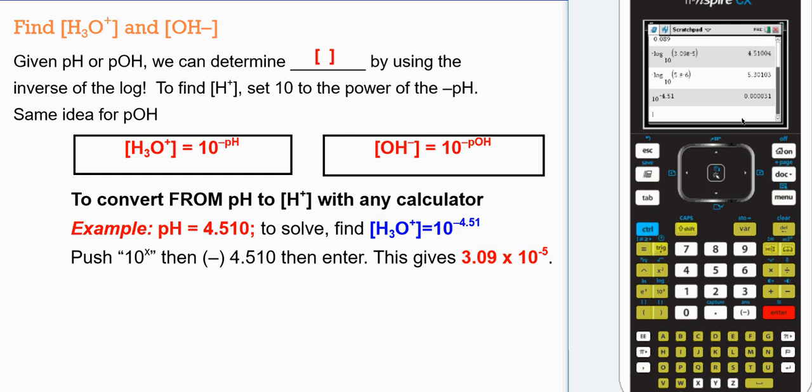And our value is 0.00031. What you have here on the calculator, actually, is I'm not floating enough digits, but it is a correct value, 3.09 times 10 to the negative 5th.